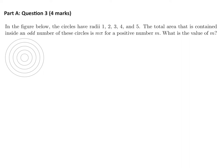In the figure below, the circles have radii 1, 2, 3, 4, and 5. The total area that is contained inside an odd number of these circles is m times pi for a positive number m. What is the value of m?